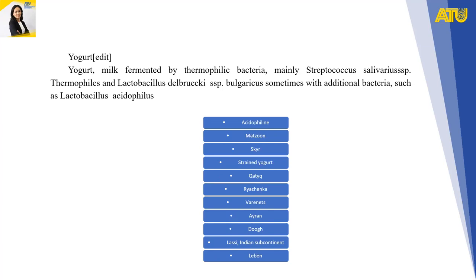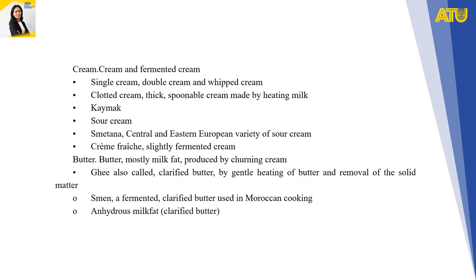Yogurt is milk fermented by thermophilic bacteria, mainly Streptococcus salivarius subsp. thermophilus and Lactobacillus delbrueckii subsp. bulgaricus, sometimes with additional bacteria such as Lactobacillus acidophilus. Yogurt varieties include acidophilin, skyr, strained yogurt, labneh, curd, ryazhenka, and others from the Indian subcontinent and the Middle East. We also have cream and fermented cream, including single cream, double cream, whipped cream, and clotted cream, a thick spooned cream made by heating milk.